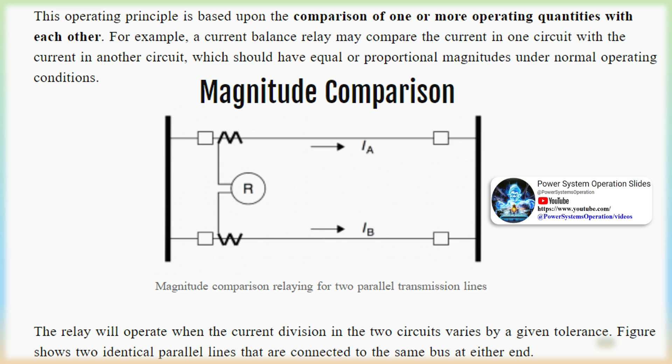The operating time for normalized currents less than 1.0 is infinite, while for values greater than 1.0 the relay operates. The actual time for operation will depend upon the design of the relay, and will be discussed further in later chapters.